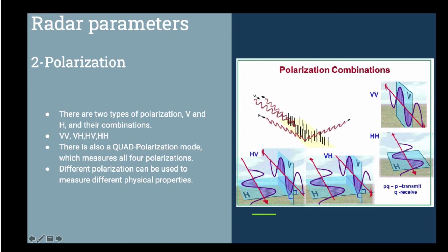There are some systems that have ability to collect data in all four combinations that are called quad pole, which can help understand extensive details of the object's structure.